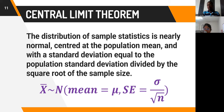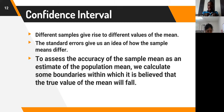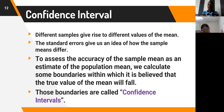We would continue with the lesson by looking at one of the very important concepts in statistics: the confidence interval. Whenever you resort to taking samples from a population, different samples give rise to different values of the mean. The standard error — the standard deviation of the sampling distribution — gives us an idea of how the sample means differ. To assess the accuracy of the sample mean as an estimate of the population mean, we calculate some boundaries within which we believe the true value of the mean will fall. Those boundaries are known as confidence intervals.